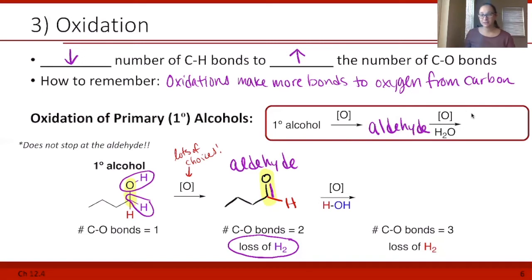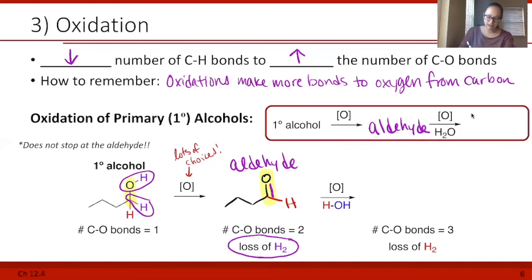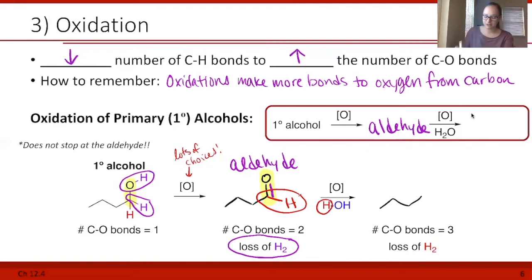However, primary alcohols are a little bit sticky because that's not where they stop. There's still another hydrogen on that carbon where the oxygen is that could be oxidized — removed to form another CO bond. If we have water in our mix as well, we're going to oxidize all the way to a third carbon-oxygen bond. This hydrogen in red is going to interact with water so that the two red hydrogens are lost as H2, and then the blue OH from water is where we get our other oxygen.